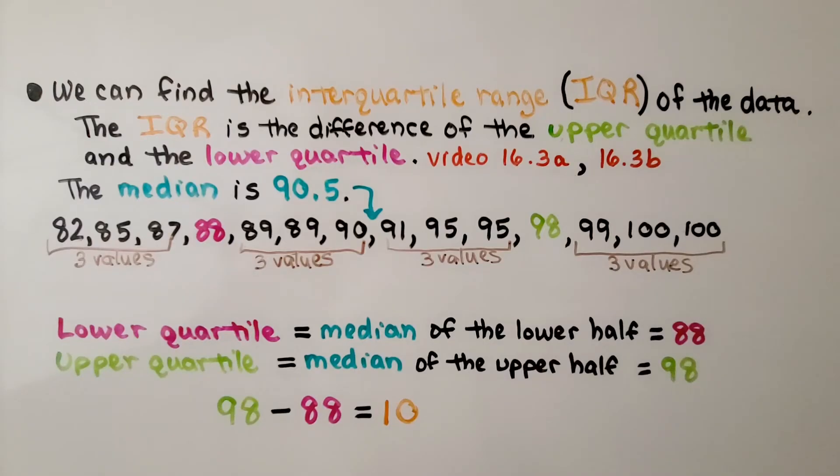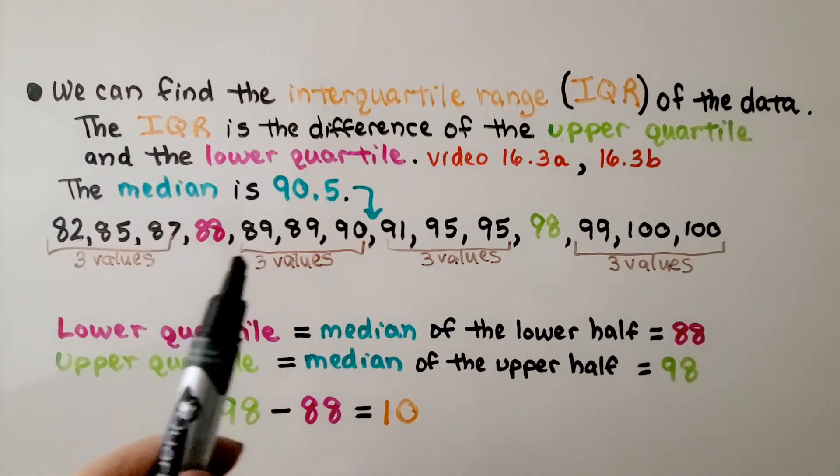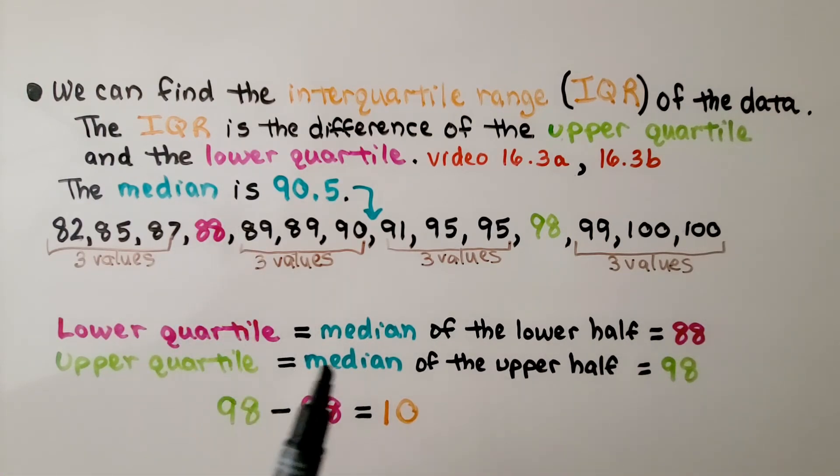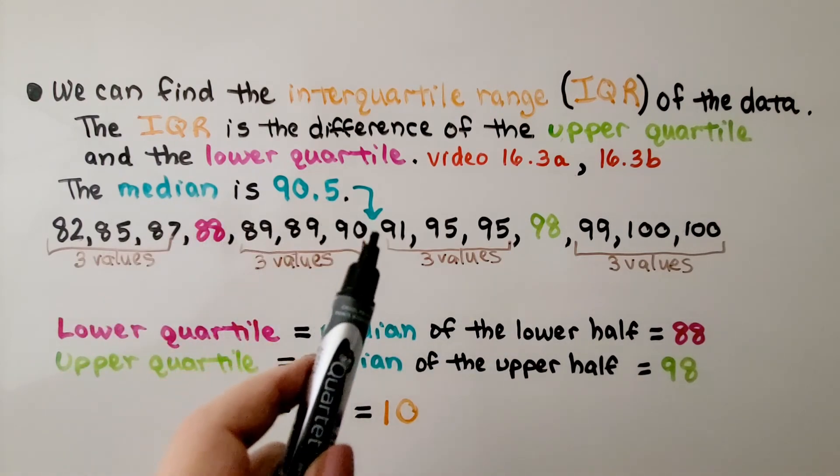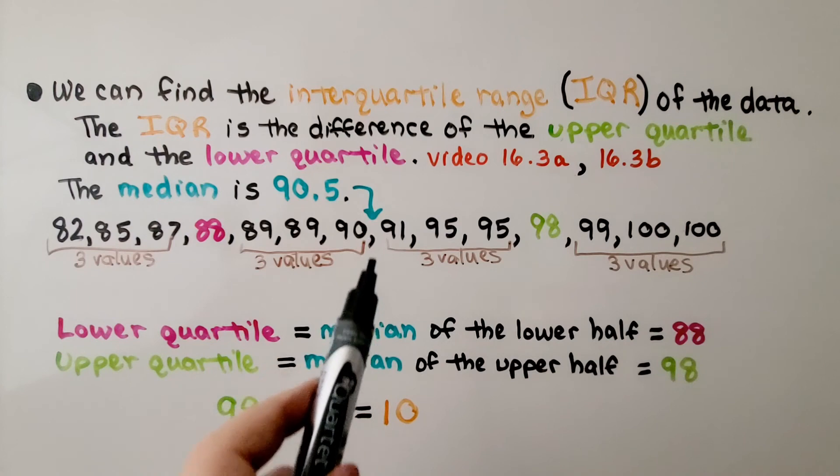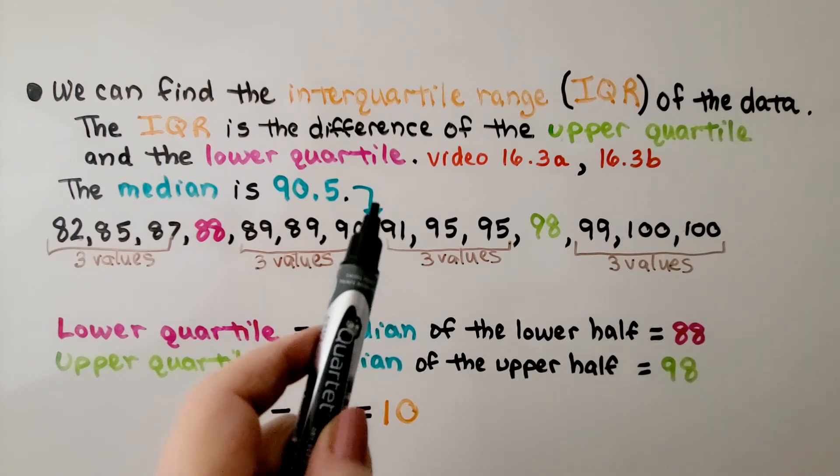We can find the interquartile range, the IQR of the data. Remember, the IQR is the difference of the upper quartile and the lower quartile. The lower quartile is the median of the lower half. The upper quartile is the median of the upper half. That's going to be the middle number of this lower half and the middle number of the upper half. We need to know the median to do this. The median is right here at 90.5.